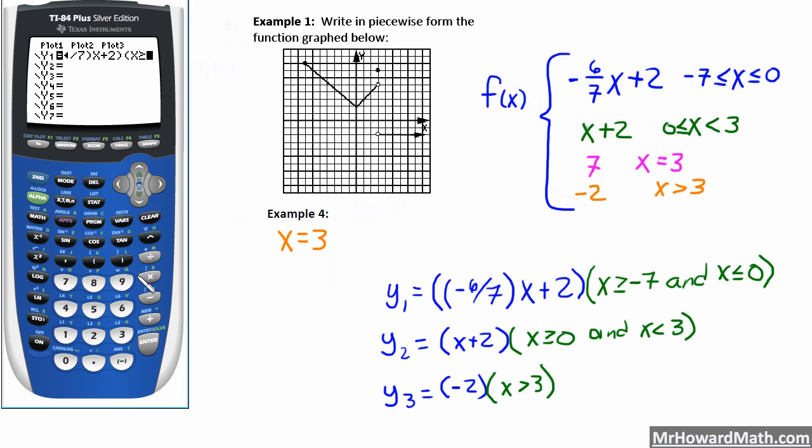So that puts my greater than or equal to in, and it's greater than or equal to negative 7. Okay, so that part's there. To get the and, you go back in to test, so second math.